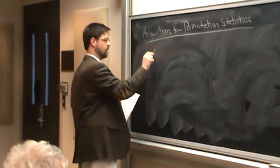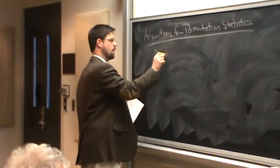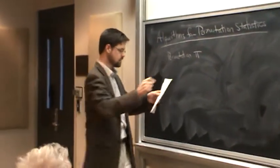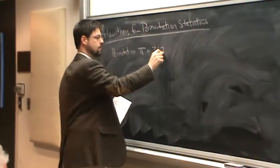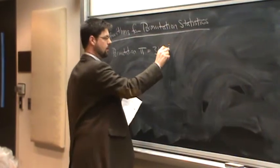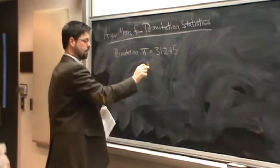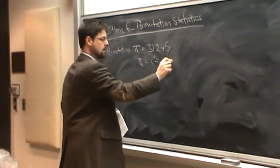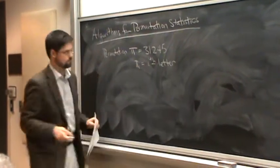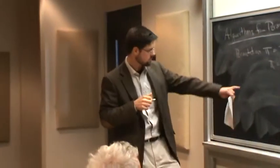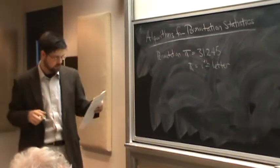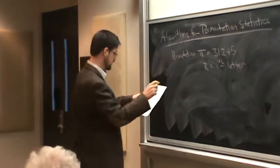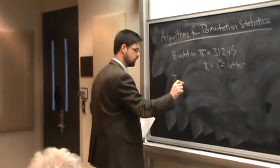For example, I'm generally going to be using pi for my permutations. This is 3, 1, 2, 4, 5, where I'll say pi_i is the i-th letter. My numbers are letters. So that's generally going to be the notation that I'm going to be using. A few preliminary definitions that I'm going to be referring back to.